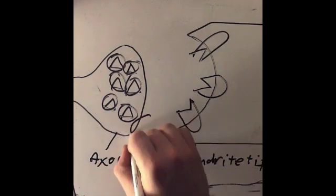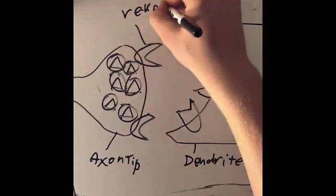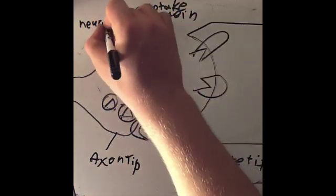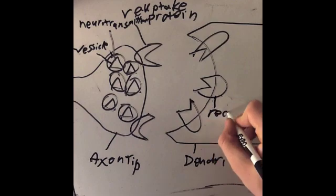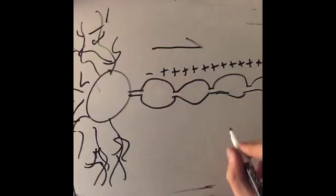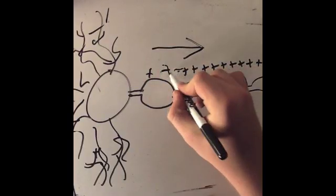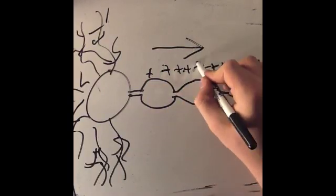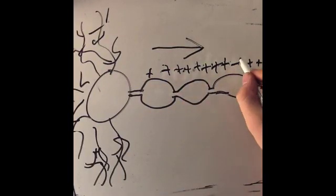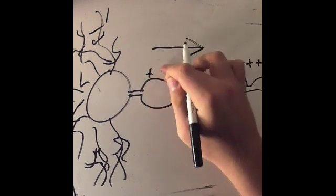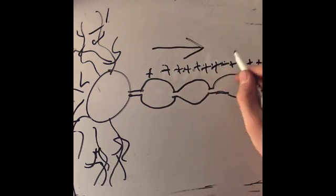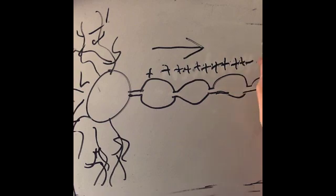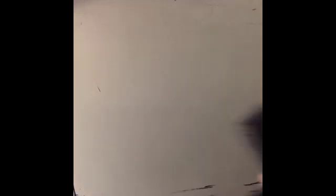The cell before the synapse is called the presynaptic cell, and the cell at the receiving side of the synapse is called the postsynaptic cell. Just so you know, an action potential is an electrochemical signal that requires neurotransmitters to be passed between neurons. It is the type of signal that neurons use to communicate.